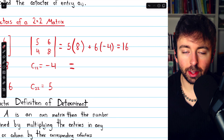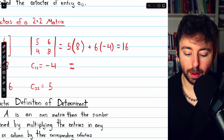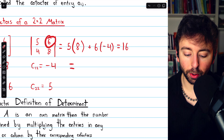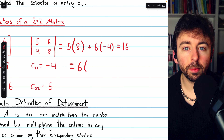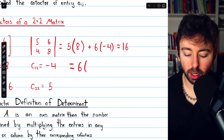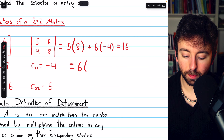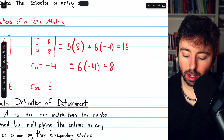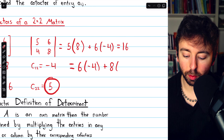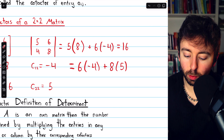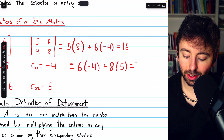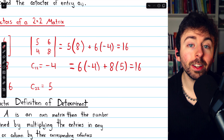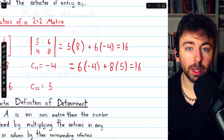We could also do this along a column. Doing the cofactor expansion along column 2: the first entry of column 2 is 6, multiplied by its cofactor C12, which is negative 4. Then we add the next entry 8 multiplied by its cofactor, which is 5. This gives negative 24 plus 40, which again is 16. No matter which row or column you do the cofactor expansion along, you get the same value for the determinant.